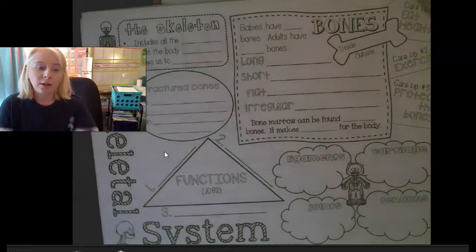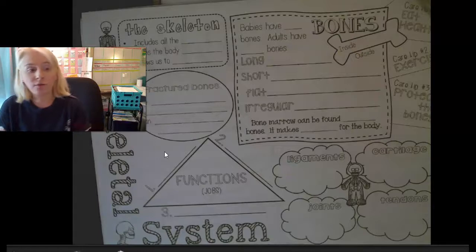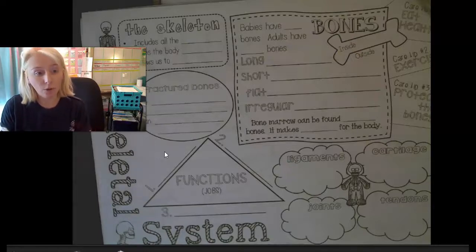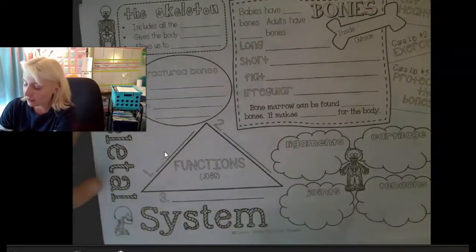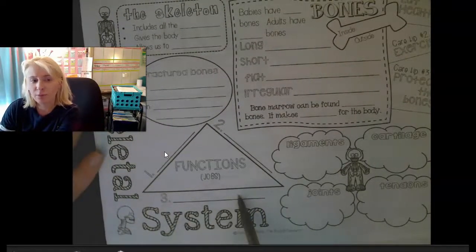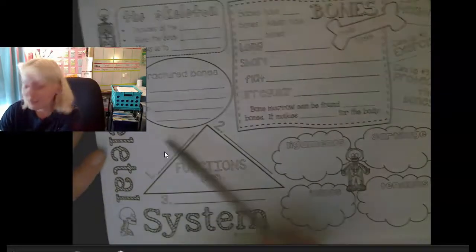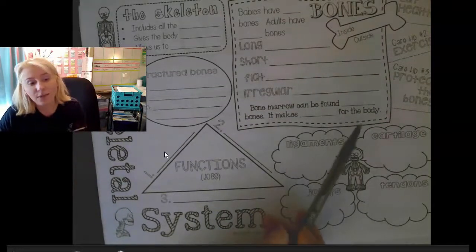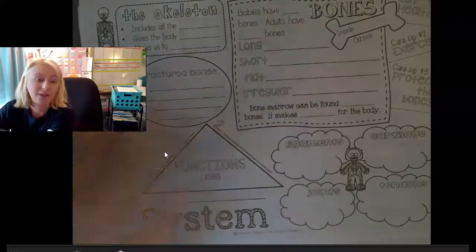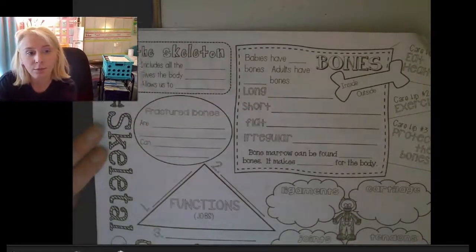On Friday we were introduced to the different body systems, and now we're going to start focusing on them individually to learn more about each one. The first one I want to talk about is the skeletal system. You learned about this in third grade, and you'll learn it again in seventh grade in even more detail. In fifth grade we go into a little bit more detail than third grade.